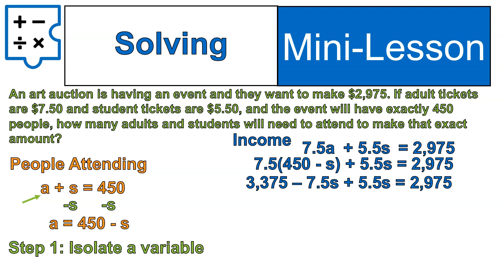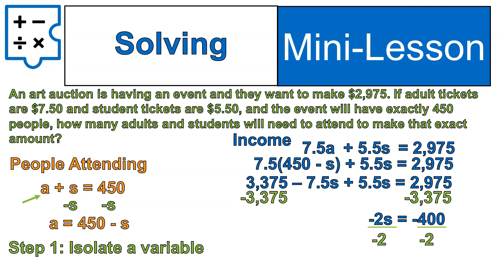Now I'm going to join together like terms — getting all the s's on the left side and all the numbers on the right. I subtract 3,375 from both sides of the equation, and then add negative 7.5s plus 5.5s, which gives me negative 2s. On the right side I have negative 400. To get s by itself, I divide both sides by negative 2, which gives me s equals 200.